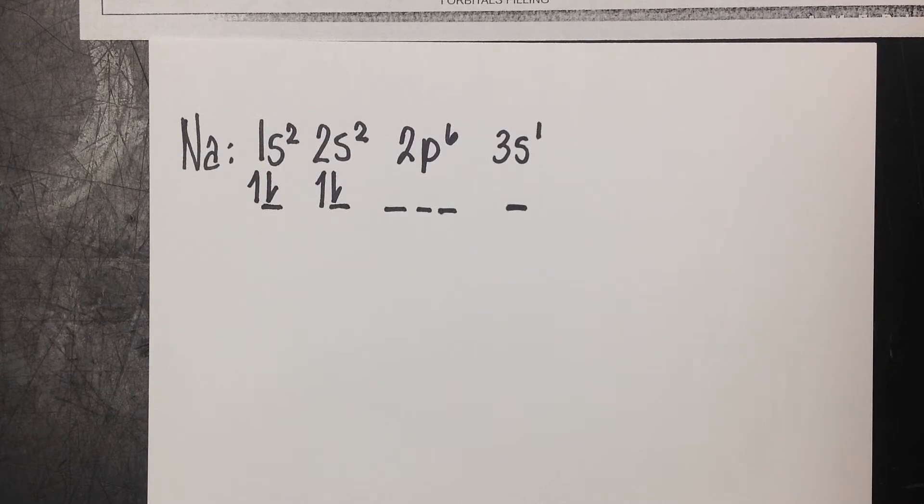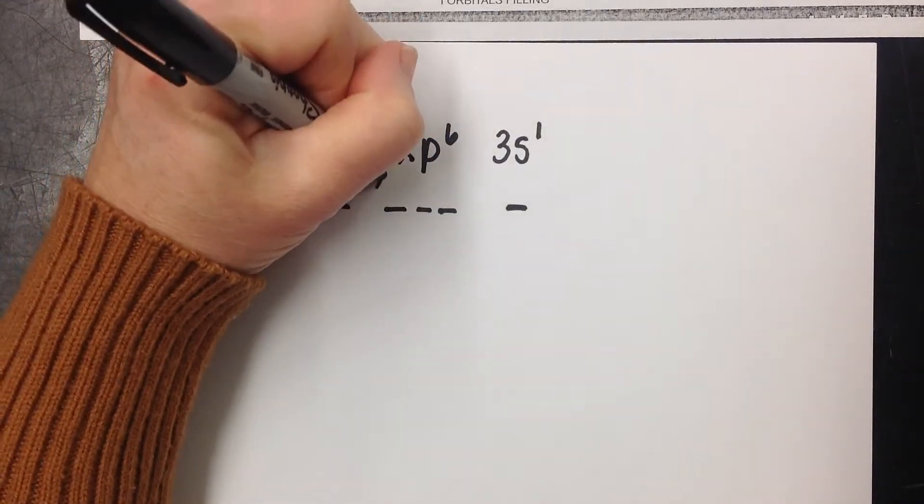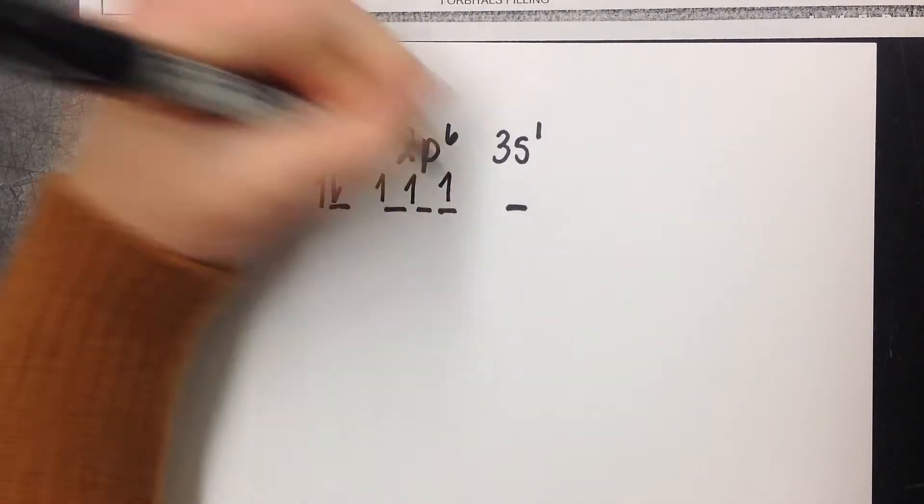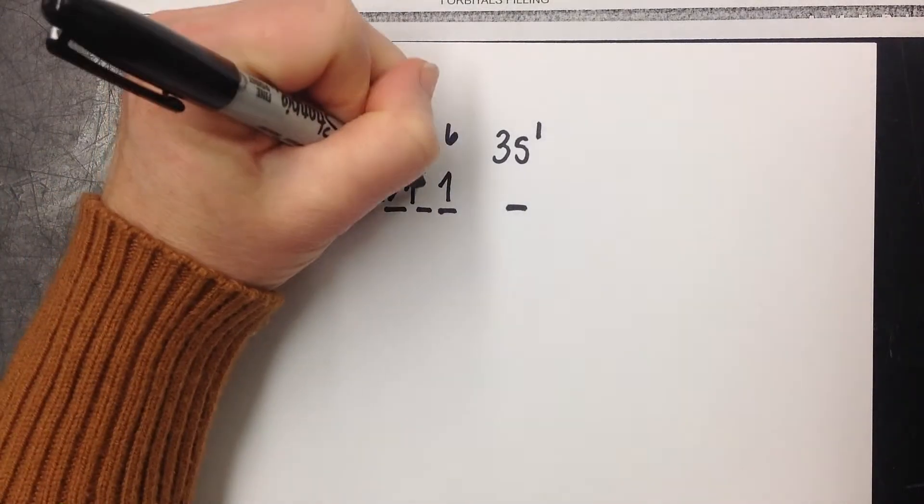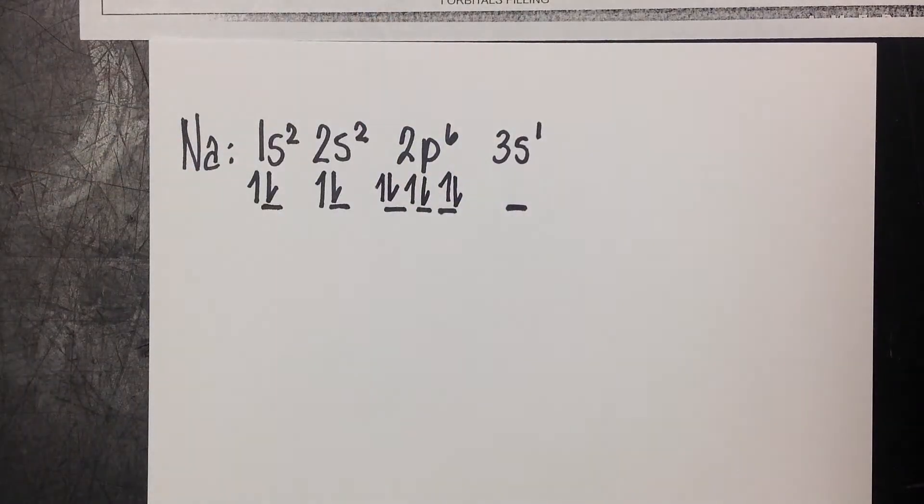That keeps that maybe to a minimum when possible. So we're going to follow Hund's Rule while we're filling these spots in. So we're going to say one, two, three, up, up, up, four, five, six, down, down, down.